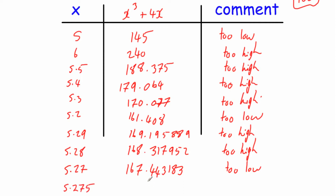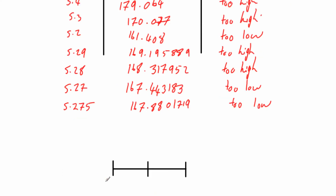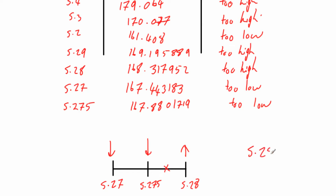5.275 gives us 167.8801719, which is too low. So 5.27 is too low, 5.28 is too high, and the checker 5.275 is also too low. Our answer would be between 5.275 and 5.28, so it's closer to 5.28. Our answer is 5.28 to two decimal places.